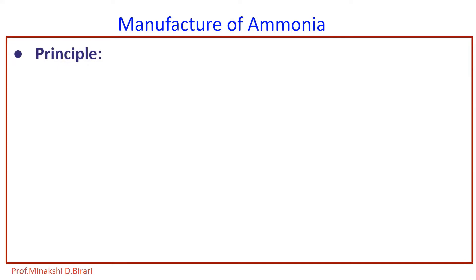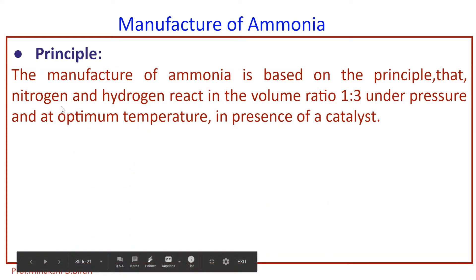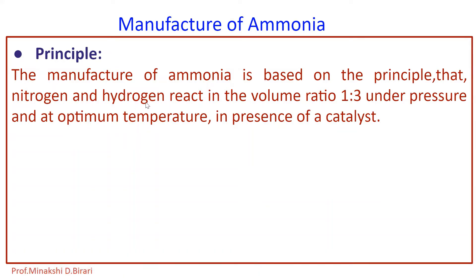For both processes, the principle is the same. The manufacture of ammonia is based on the principle that nitrogen and hydrogen react in the volume ratio 1 to 3 under pressure and at optimum temperature in the presence of a catalyst to manufacture ammonia. That is the principle involved in both Haber process and modified Bosch-Haber process, which is sometimes also called Bosch-Haber process.